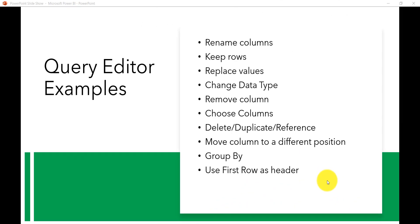Here we will see a few Query Editor examples. We will see how we can rename columns, use keep rows, use replace values, change the data type, remove columns, choose columns, use duplicate or reference — which is quite important — and how we can move a column to a different position, do a group by, and use the first row as a header.